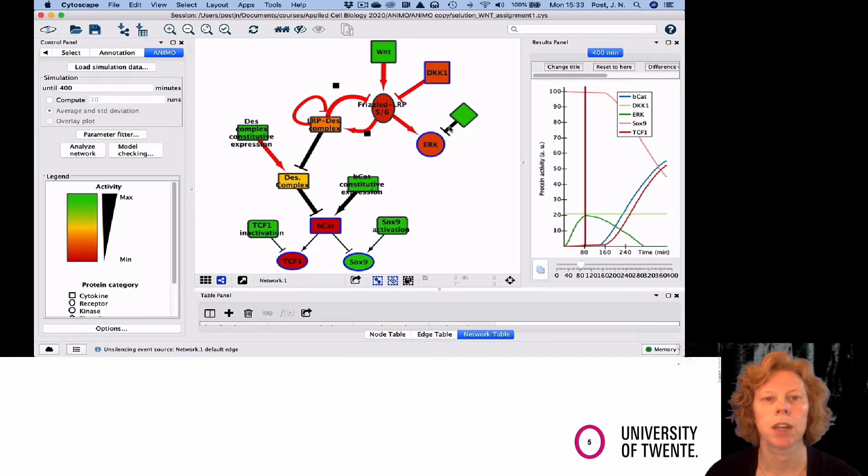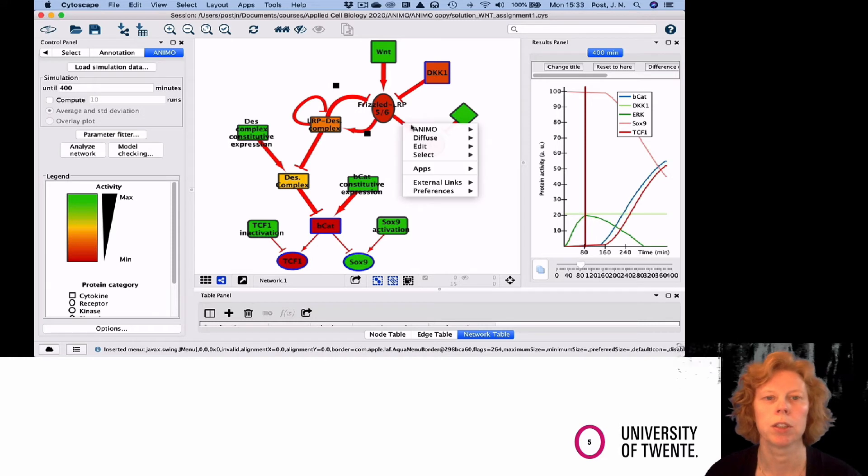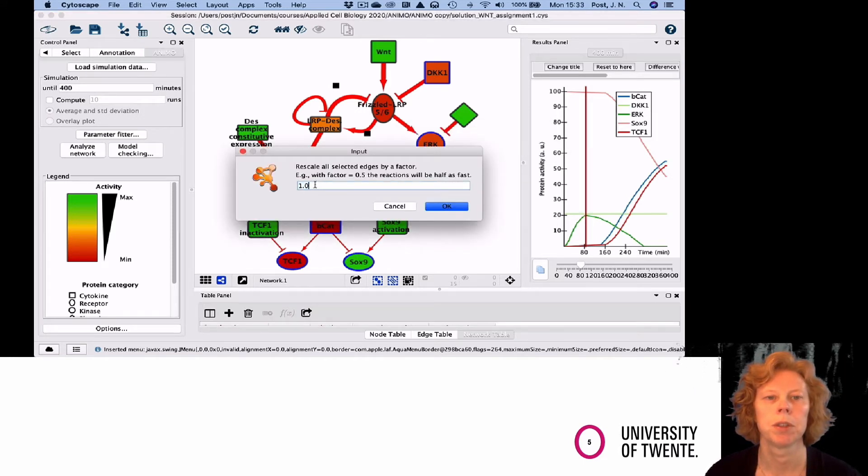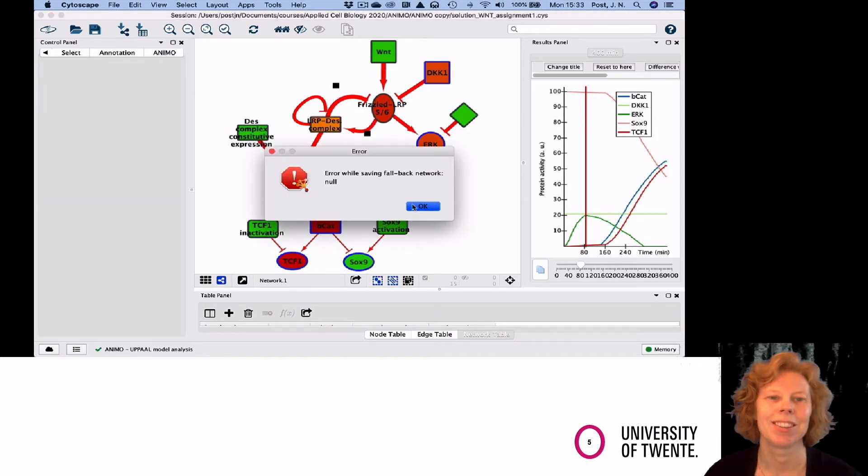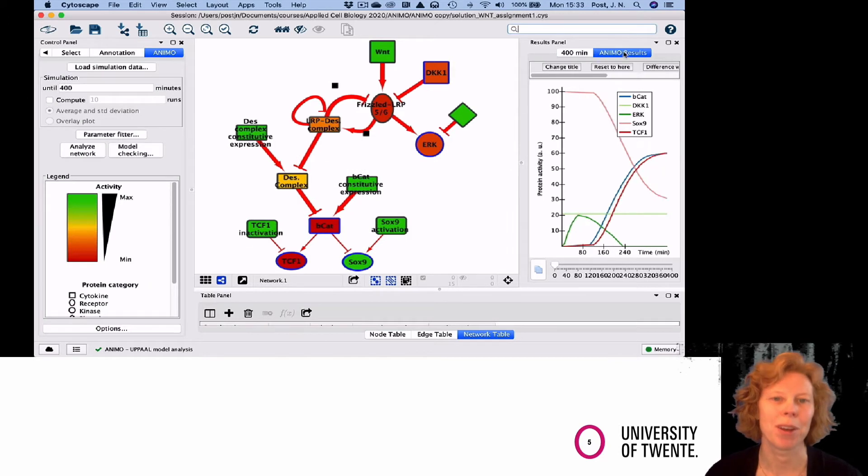You can select all the interactions either by clicking on every single one while pressing shift, like I do here, or by select all and then going to the interaction. So you click on an interaction and then choose ANIMO and rescale K factors. Now I rescaled by 90 divided by 60 is 1.33333, and then it rescaled all my factors.